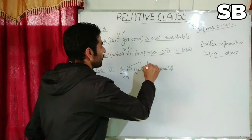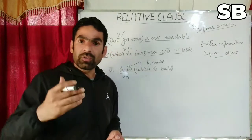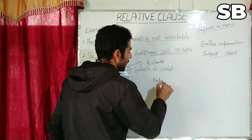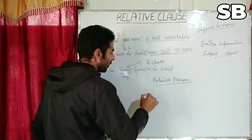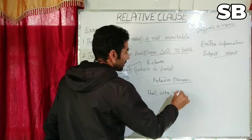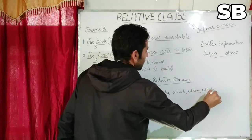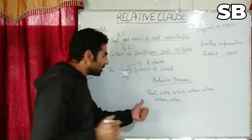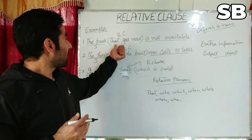This is the extra information and we call it a relative clause. A relative clause always begins with a relative pronoun. The relative pronouns we use are: that, who, which, whose, and sometimes 'where' and 'when' are also used. These are the relative pronouns which we use whenever we make a relative clause.